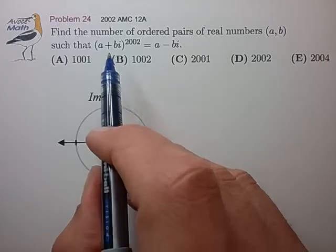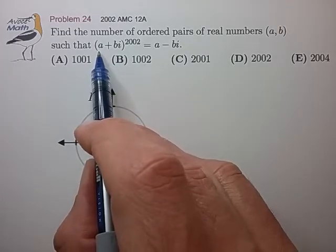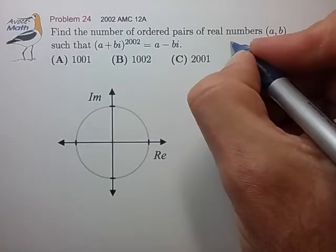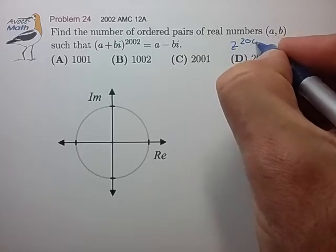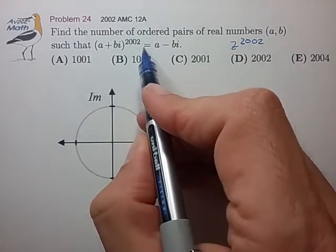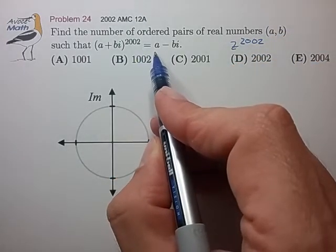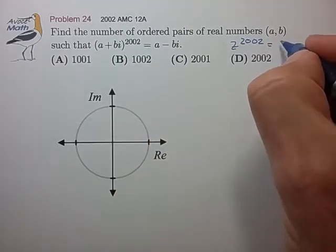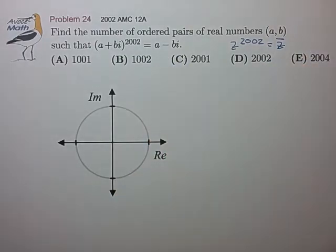Okay, so looking at this we see that we're representing a complex number Z to the 2002 power as equaling essentially the complex conjugate of Z. So that's the algebraic problem statement.